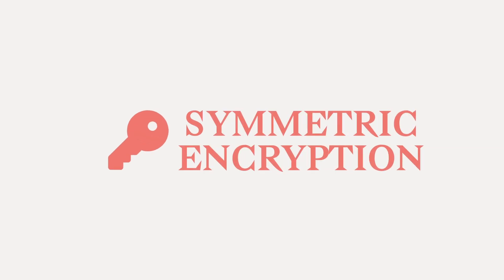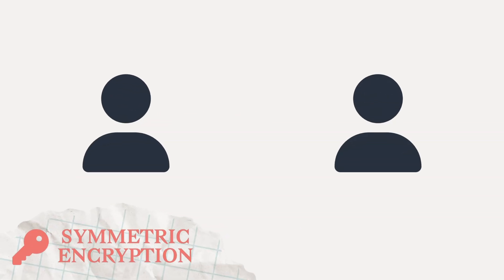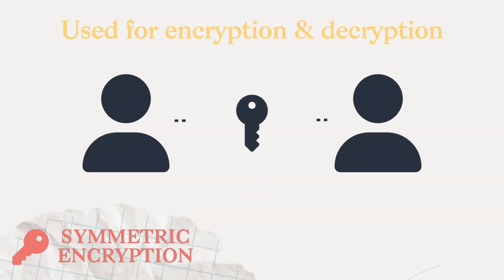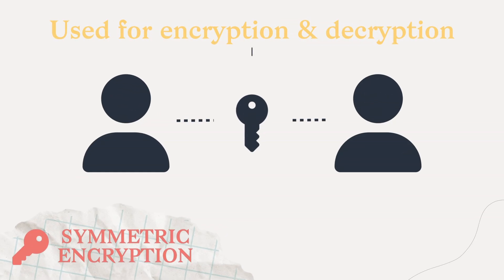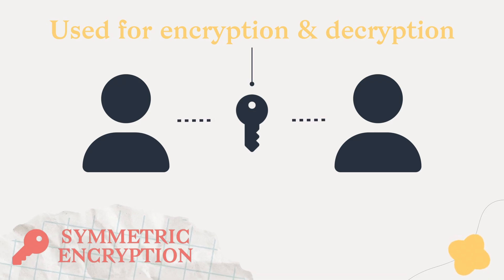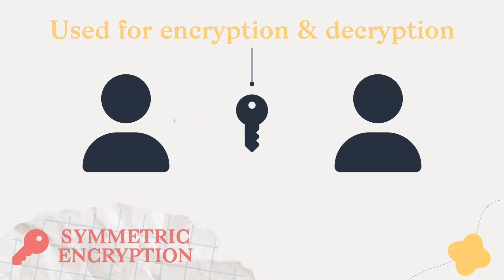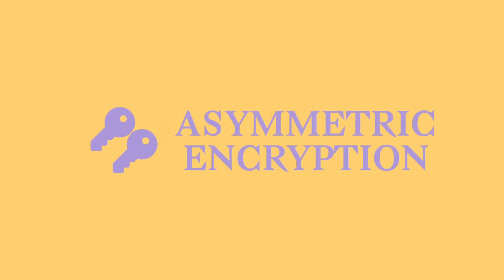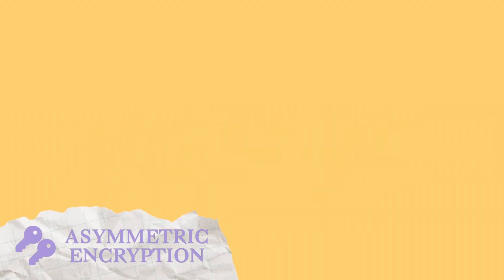Symmetric encryption is extremely fast and secure, but it presents a challenge. If you want to talk to someone you've never talked to before, how do you both get the same key in advance? Asymmetric encryption is much slower and more complex, but it solves this problem.